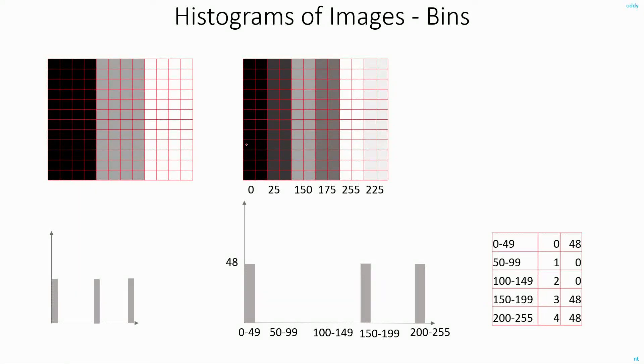Also note that, there is one more way of drawing histograms. In this, we actually calculated all the pixel intensity values. Instead, what you can do is, you can group pixels that are similar to each other into one single bin. So let's say for example, I group pixels between 0 to 50 in one bin and pixels from 50 to 99 into another bin and so on and so forth up to 200 to 255.